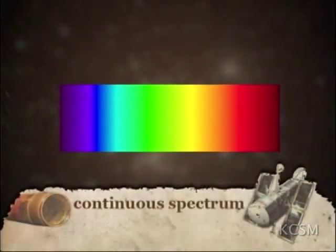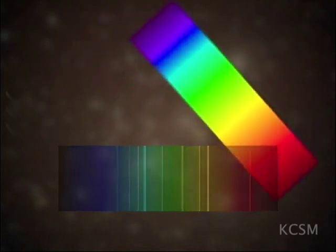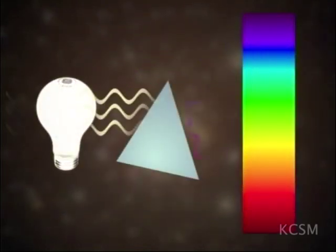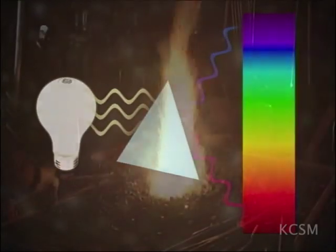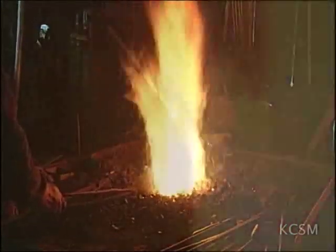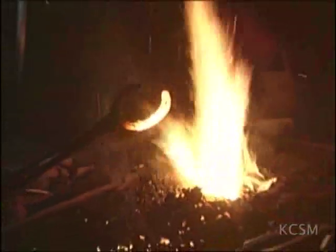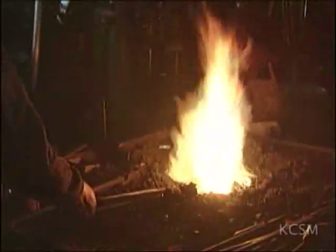Kirchhoff's first law deals with the continuous spectrum. As opposed to emission spectra, which appear as bright lines at specific wavelengths, continuous spectra are produced by an object that gives off light at all wavelengths. For example, a horseshoe being heated in a forge changes from dull red to brighter orange to brilliant yellow-white as the atoms become more excited, causing more collisions and radiating photons at shorter wavelengths.